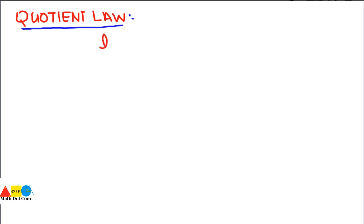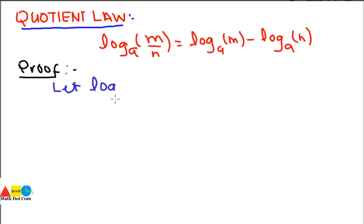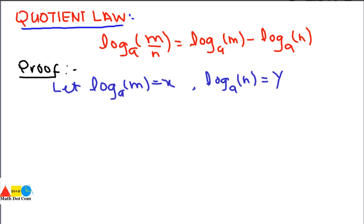Now we move to the second law: the quotient law. It is stated as: log base a of (m/n) equals log base a of m minus log base a of n. For the proof, we make the same assumptions as before: let log_a(m) = x and log_a(n) = y.